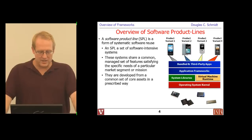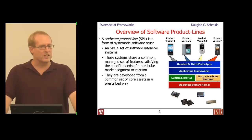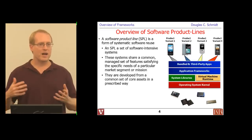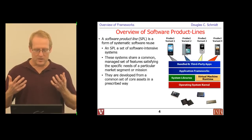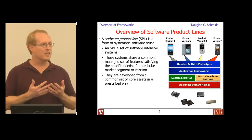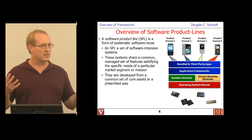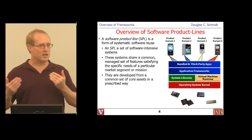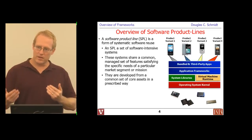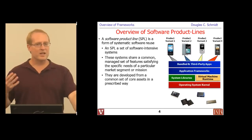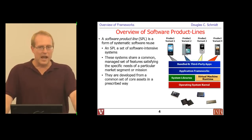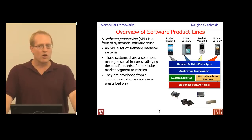A software product line is a set or family of software-intensive systems. When we talk about a software product line, we're always talking about commonality and variability. Some things are common to all the different applications that use the product line; others are hooks intended to be customized to handle different variations for different types of products that use the product line.